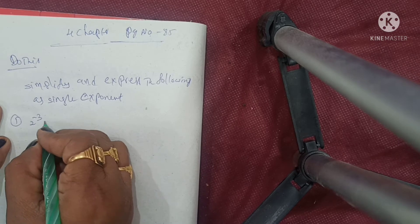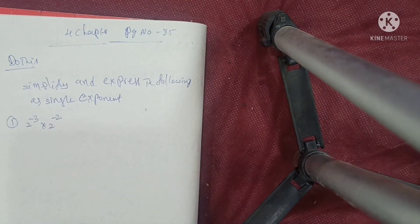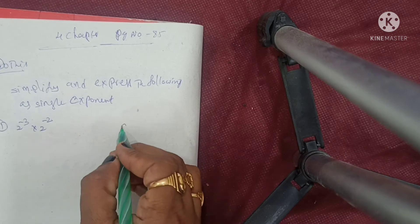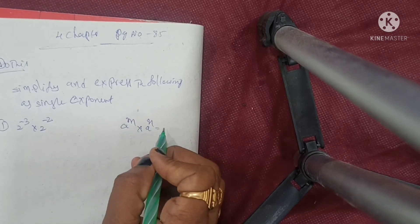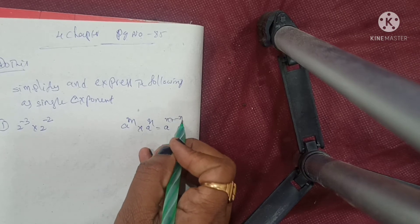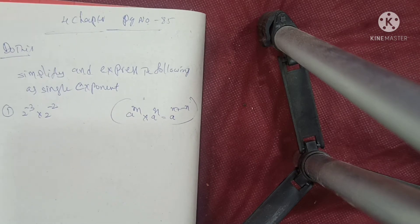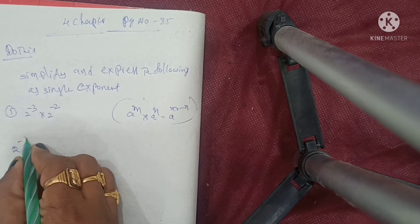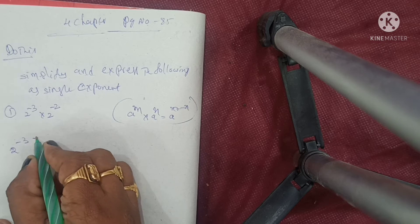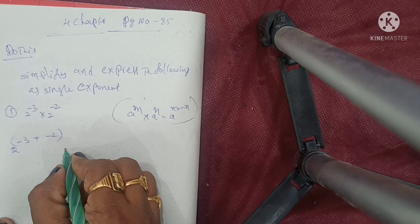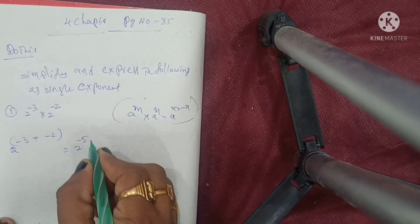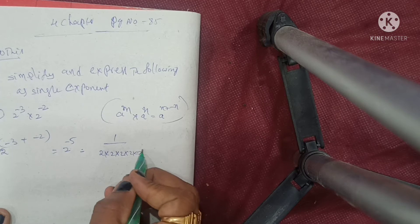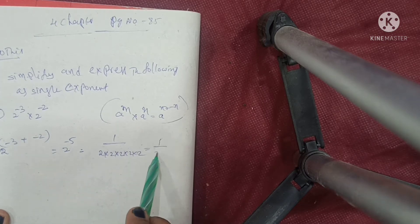First one: 2 to the power of minus 3 into 2 to the power of minus 2. How to do this one? The formula is a power of m into a power of n is equal to a power of m plus n. Using this formula: 2 power of minus 3 plus minus 2, which means 2 power of minus 5. That means 1 by 2×2×2×2×2, which equals 1 by 32. Simple.